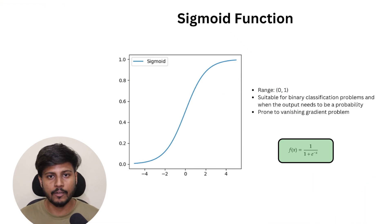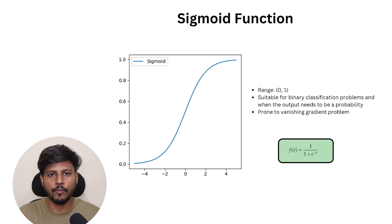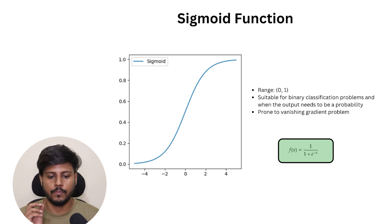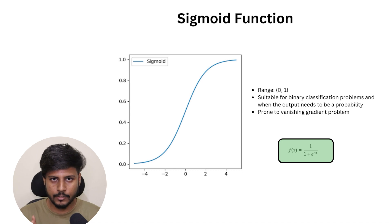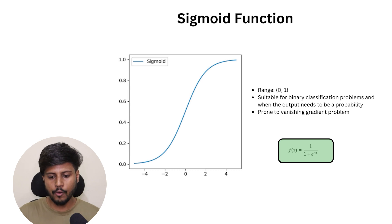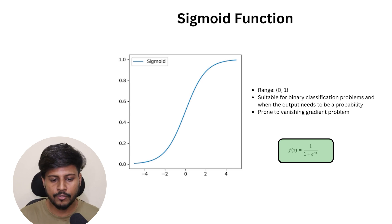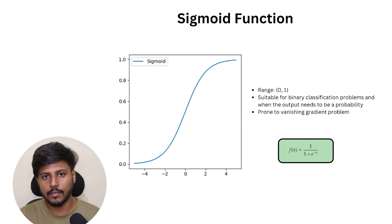The very first function we're going to discuss is the sigmoid activation function. As you can see, its graph has an S-shape curve, and it maps the input to a value between 0 and 1. This works great for binary classification — predicting probabilities between two values. You apply the sigmoid activation function in the output layer for binary classification. Mathematically, it is represented as 1 / (1 + e^(−x)).